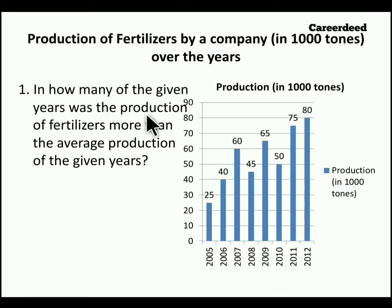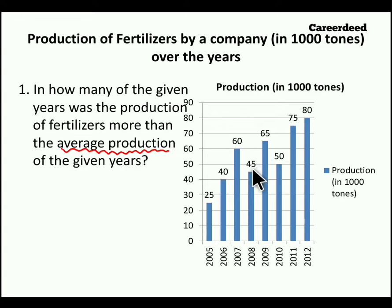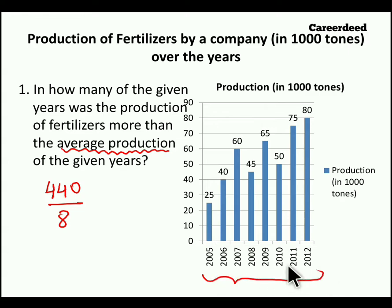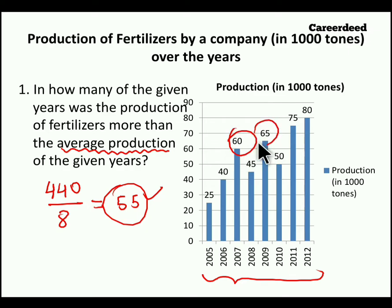The first question is: in how many of the given years was the production of fertilizers more than the average production? First find the average: 25 plus 40 plus 60 plus 45 plus 65 plus 50 plus 75 plus 80 equals 440. To find average, 440 divided by 8 equals 55. So 55 is the average production. In how many years is production greater than 55? In 2007, 2009, 2011, and 2012 it is greater. So in 4 years the production is greater than the average production. The answer is 4 years.